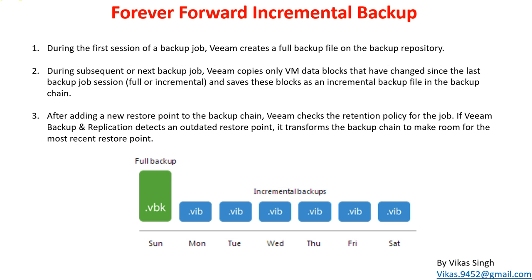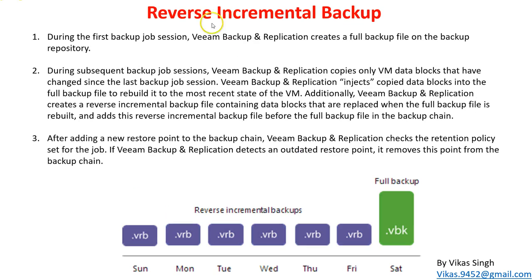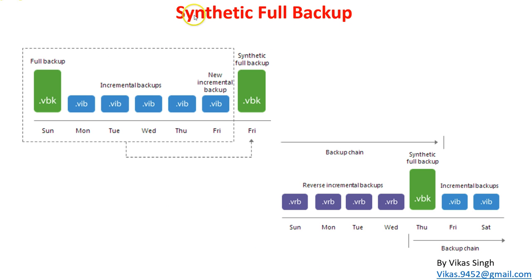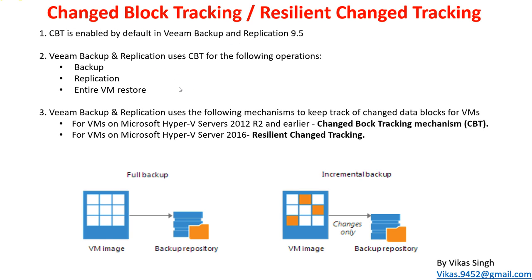We will see one by one how to set forever forward backup, forward incremental backup, reverse incremental backup, and synthetic full or active full backup. Two important topics related to backup methods are how Veeam identifies what has changed and what incremental data needs to be taken during the next backup job. For this, Veeam uses CBT — Change Block Tracking — and RCT — Resilient Change Tracking. CBT is enabled by default in Veeam Backup and Replication 9.5.